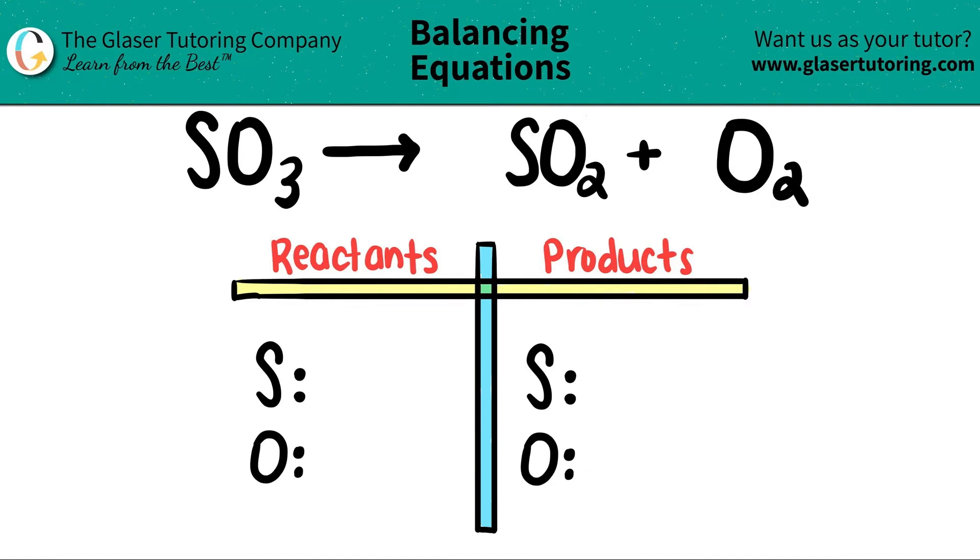So let's start on the left side. For sulfur, I only have one, so I have one sulfur, and this three tells me that I have three oxygens.